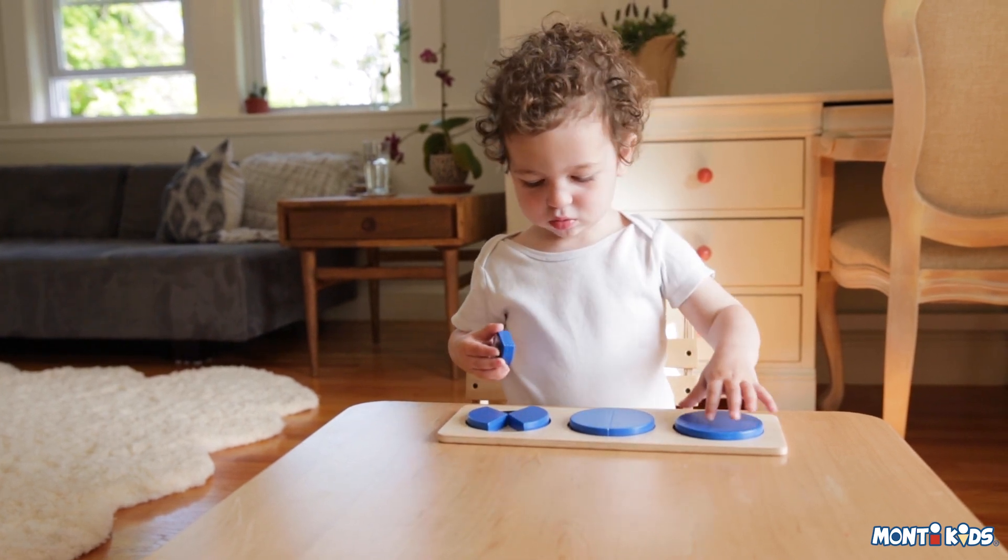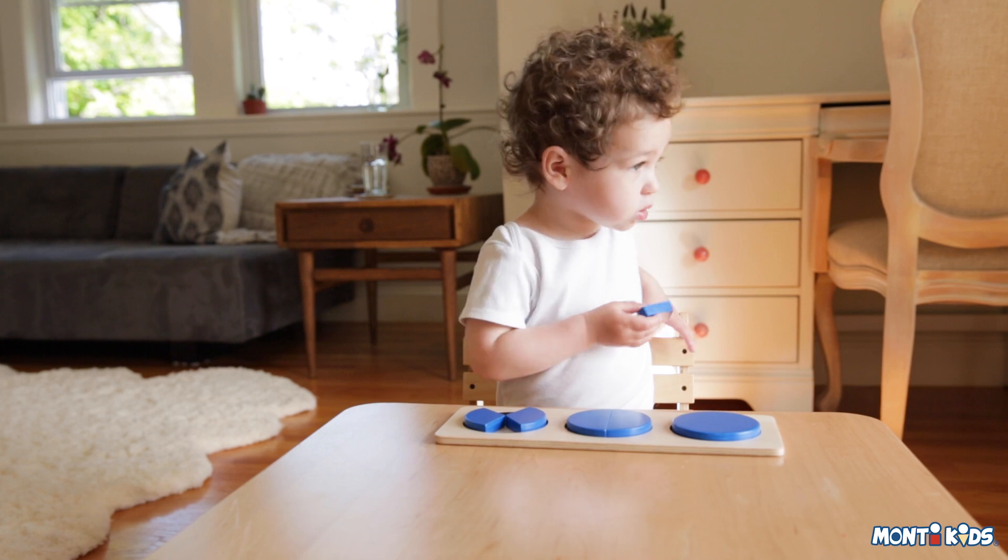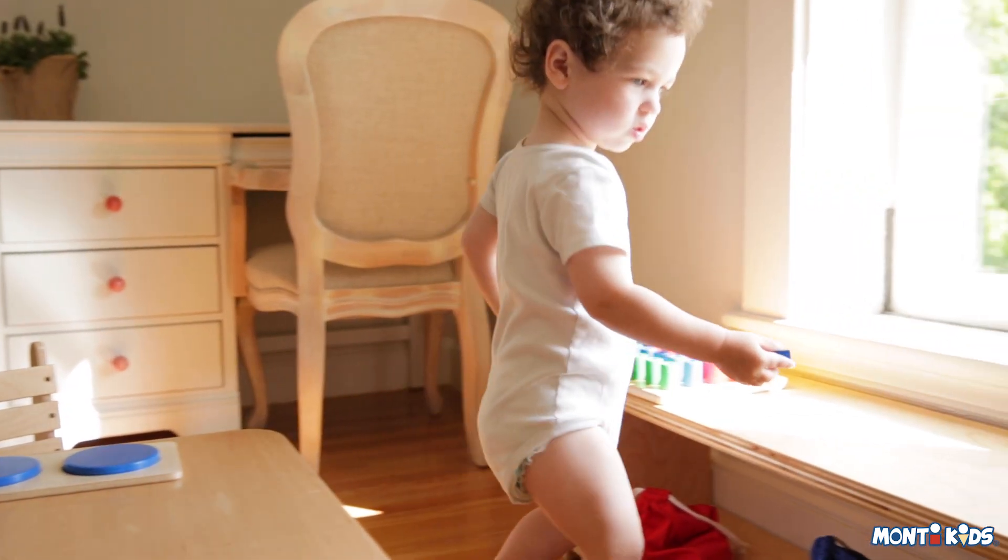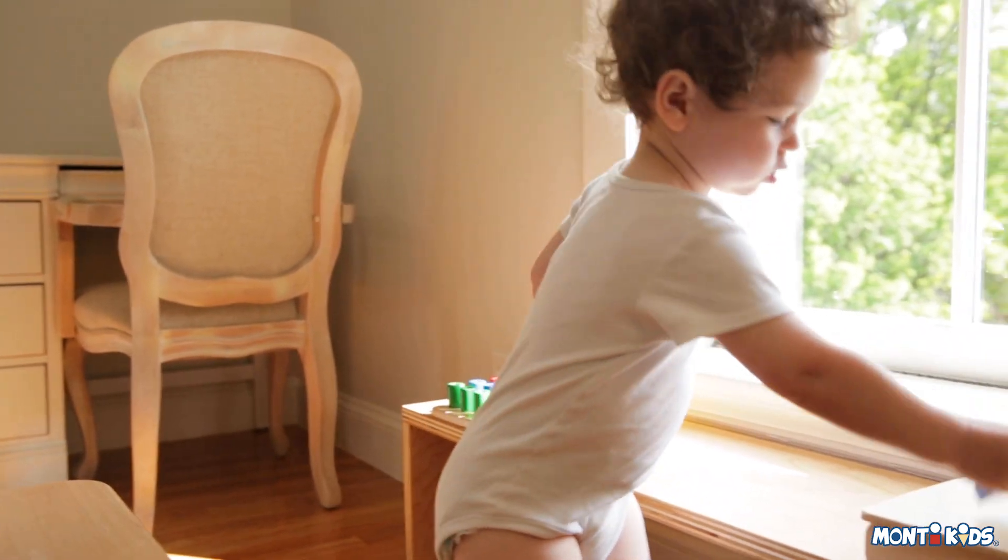Even with a control of error, your child may not realize how to correct his mistake. This will come with time and a lot of practice. Figuring it out on his own is the most powerful way to learn.